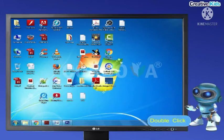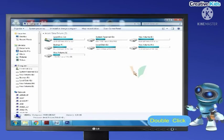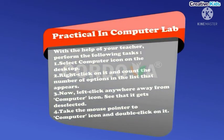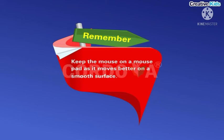Double click means to quickly press the left mouse button twice. Practical in computer lab: with the help of your teacher, select the computer icon on the desktop. Right click on it and count the number of options in the list that appears. Now left click anywhere away from the computer icon and see that it gets deselected. Take the mouse pointer to the computer icon and double click on it. Remember: keep the mouse on a mouse pad as it moves better on a smooth surface.